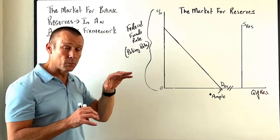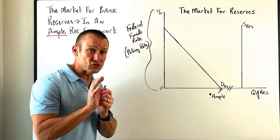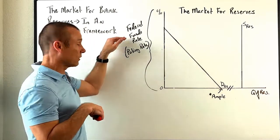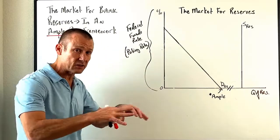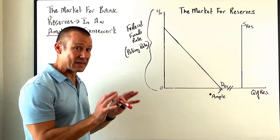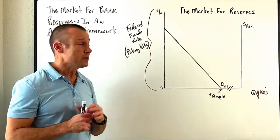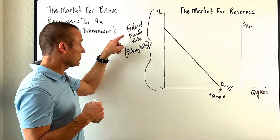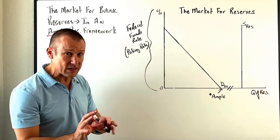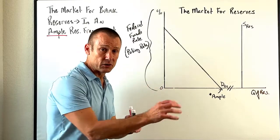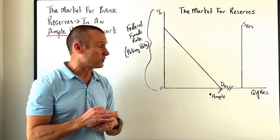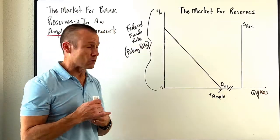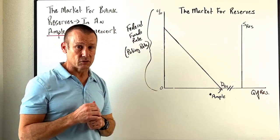The federal funds rate is their policy rate — they target it and change it with the desire to have those changes transmit to the rest of the economy. This is what we call a short-term interest rate, and the Fed has a lot of influence over it. When they change it, they want to change pretty much all short-term interest rates and even longer-term rates. This is their transmission mechanism.